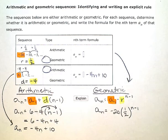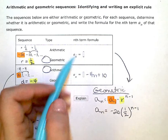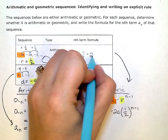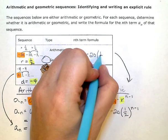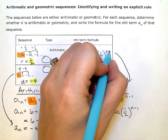And my geometric one was a_n equals negative 20 times (1/2) to the (n minus 1) power.